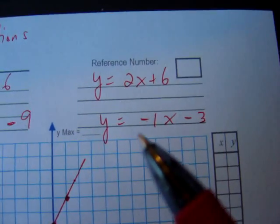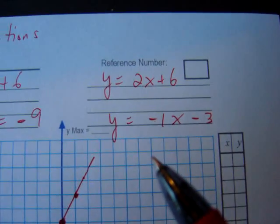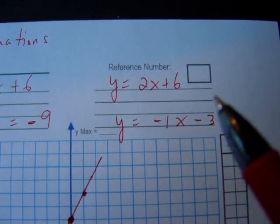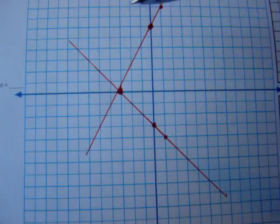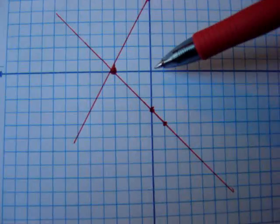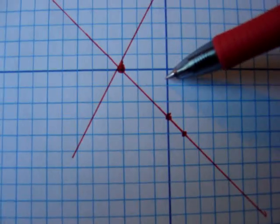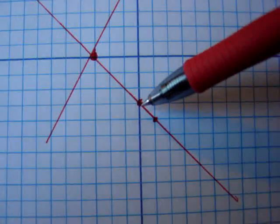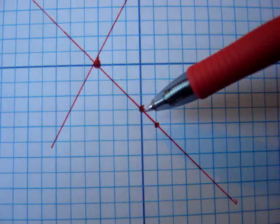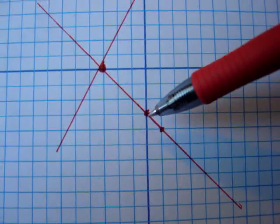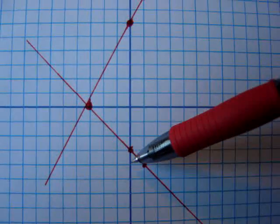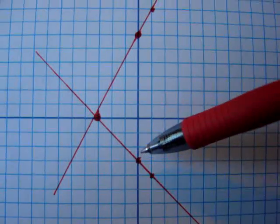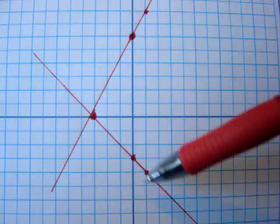Secondly, we need to graph this one here, y equals negative 1x minus 3. Negative 3 is your y-intercept. So let's go back to our y-axis. Here's the origin. Now we need to go down 3 units. Negative 1, negative 2, negative 3. There is our y-intercept. And a slope of negative 1 means down 1, right 1. So there we have it. Down 1, right 1. Or you could have went up 1, left 1. You see, either way, you're following the same slope.